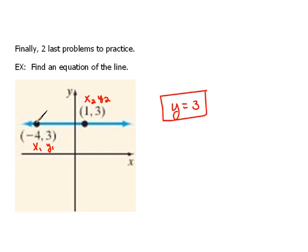Now if you went through and did the slope between these two points, you would see that the slope is 0.